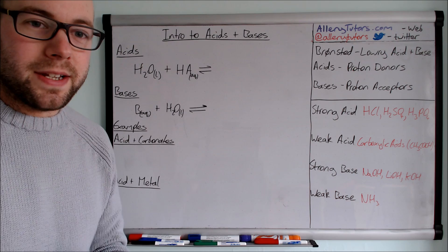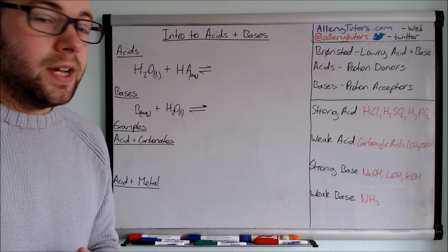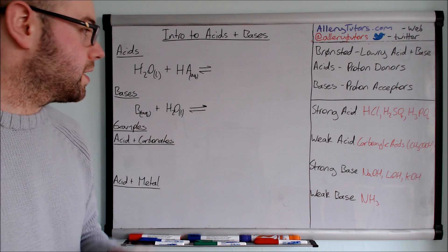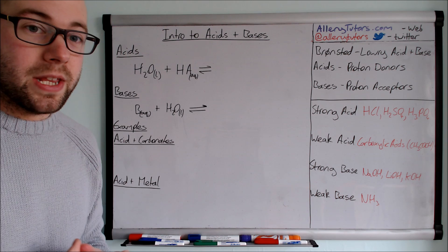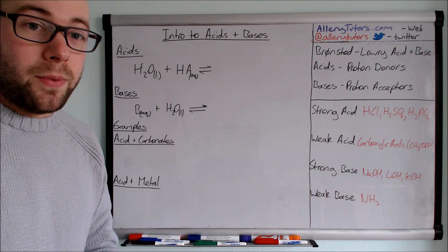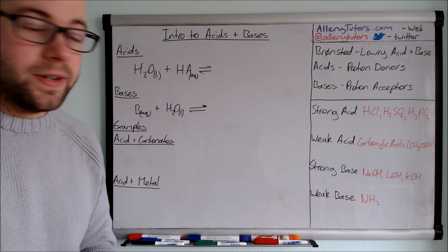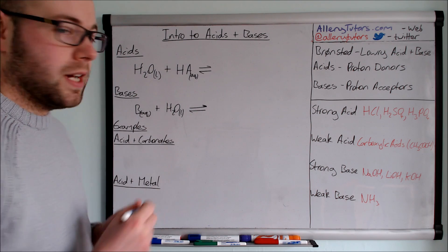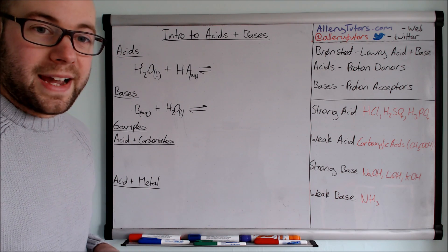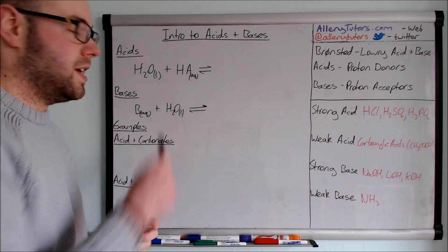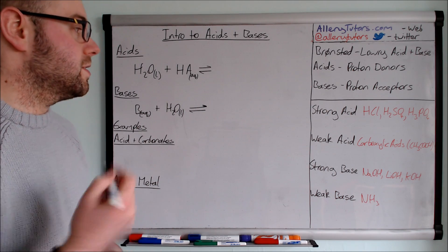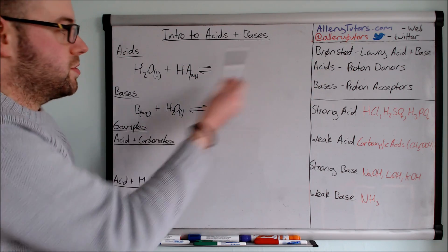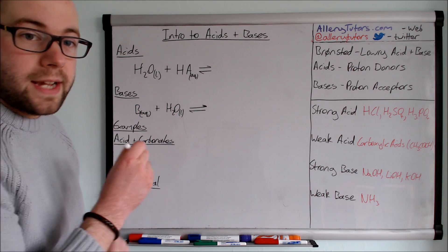Okay so an acid, according to Bronsted-Lowry, is a proton donor. So we've got an equation here, a generic equation to show how an acid would work, and we've used HA to represent the acid. Now acids will react with water and they would form an acidic solution, and so I'm going to show you how this is actually made. So you can see we've got H2O liquid, and all acids are aqueous, they have to be dissolved in solution. So HA is aqueous in this case, and so what we do is effectively, this is our acid.